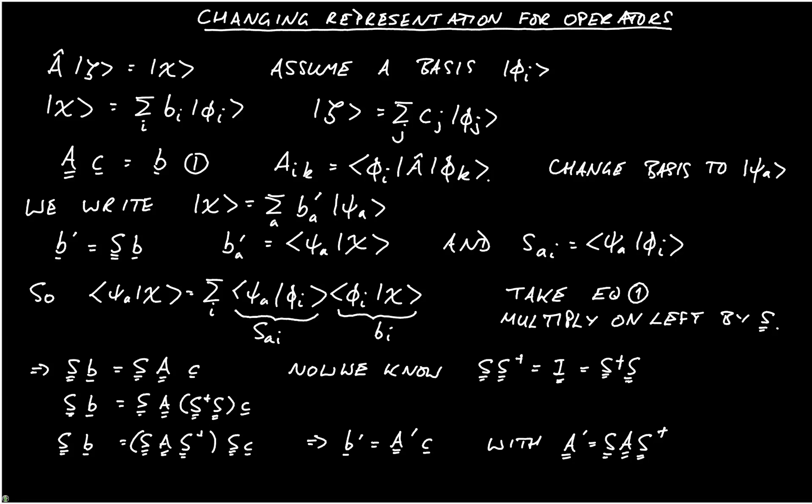And that's one way to see how we can change representation. There's a second way, which involves matrix elements, and I will do that on a new page. In order to do this, let's assume from the start two basis sets.